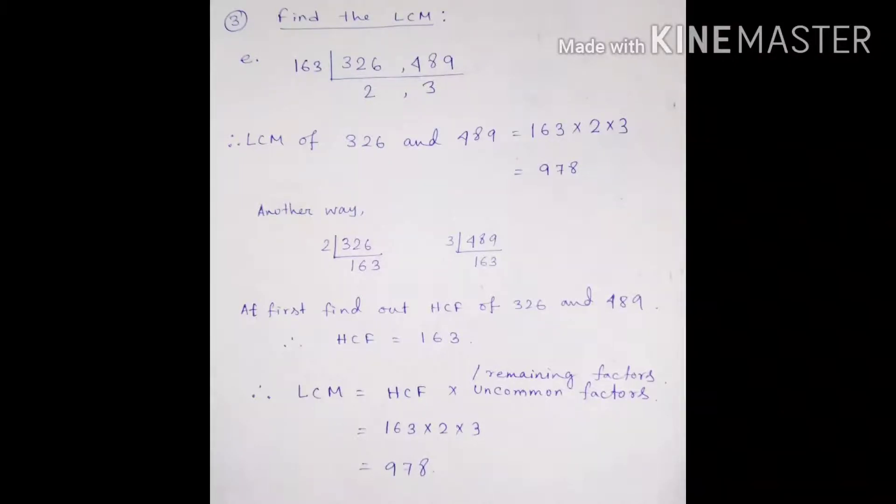So you know that for LCM we have to take two numbers together. And after repeated division by 163 we got 2 and 3. And so what will be the LCM? So LCM will be 163 multiplied by 2 and 3.